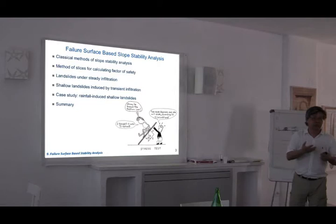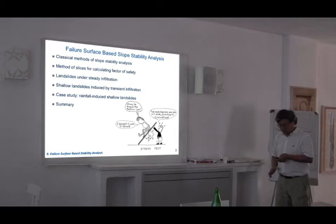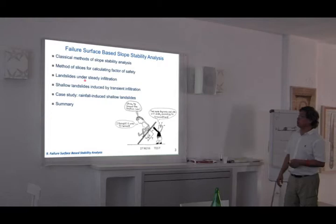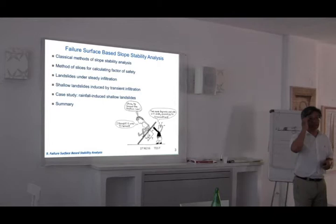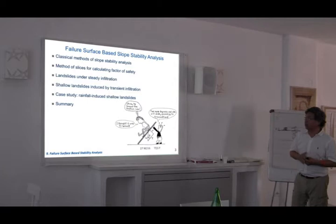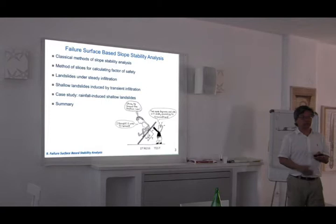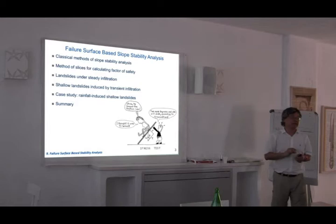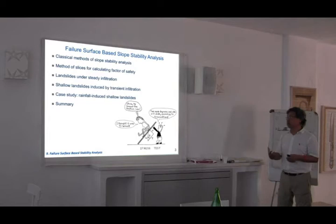Particularly the classical method uses what we call the method of slices, and then we will calculate the same. We will also use an illustration of the method of slices under a steady-state illustration — both classical as well as expanding to unsaturated or variable saturation conditions. The expansion from classical to variable saturation is quite simple: all we need to do is replace the pore pressure by suction stress. Everything else is the same. We'll also use a shallow landslide under transient infiltration, and I'll discuss what the current USGS trigger model is being implemented using this transient framework.